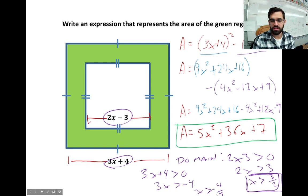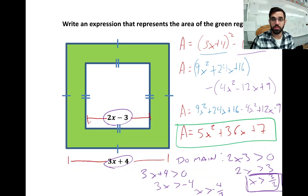What that means is, if x = -4/3, this expression would equal 0. So as long as x is bigger than -4/3, this expression gives us a positive value, which is what we want since it's a side length of a square. This is a domain restriction.